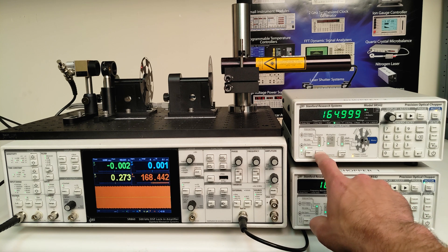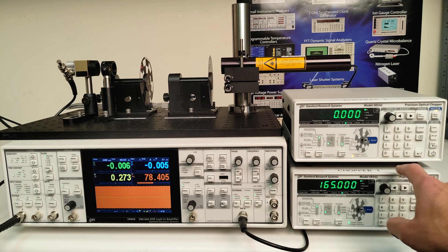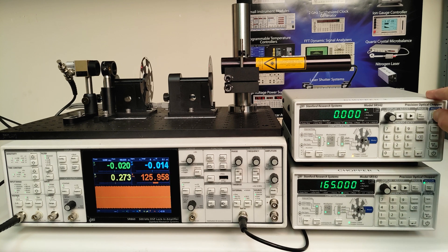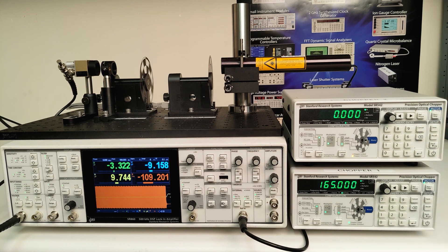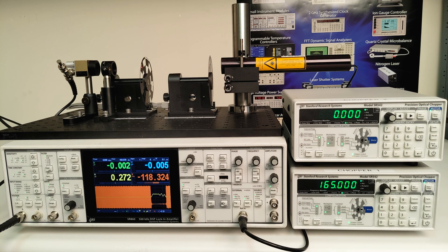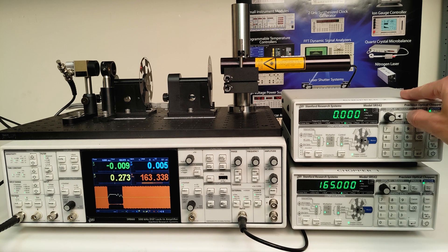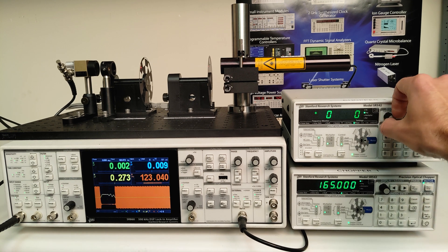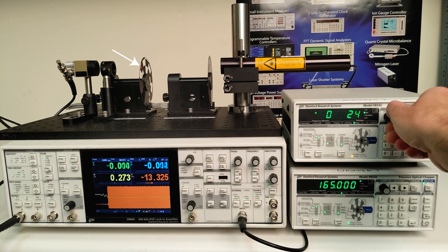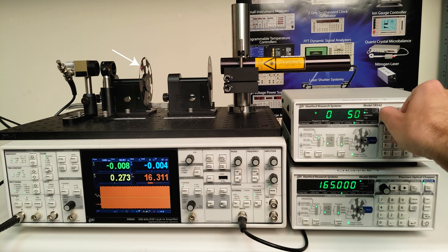To do so, set chopper 1's source to internal with a frequency setpoint of 0 Hz. When we start the motor, the motor orientation is indexed and then held at a fixed orientation of 0 degrees.